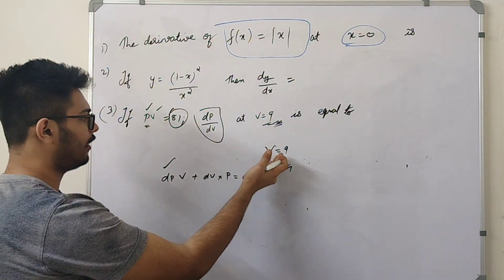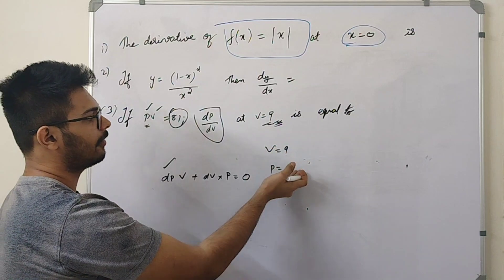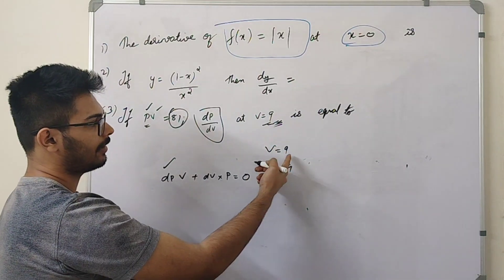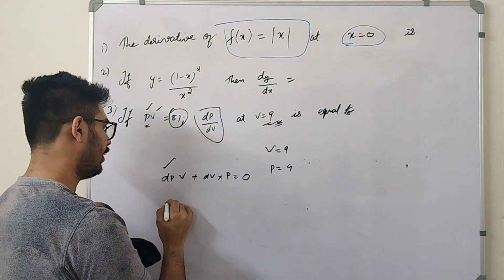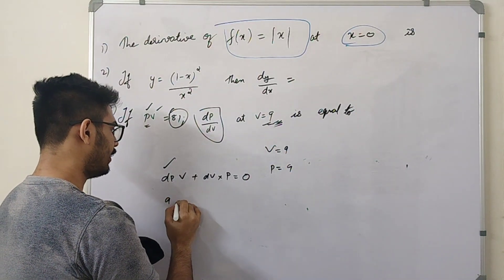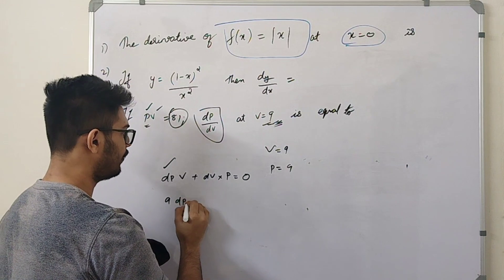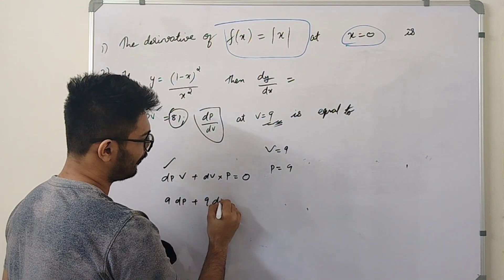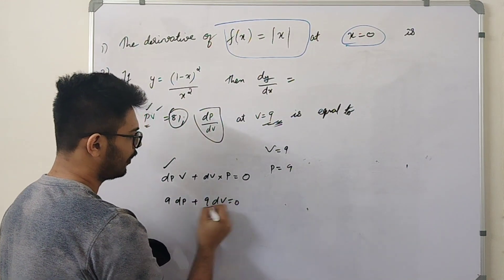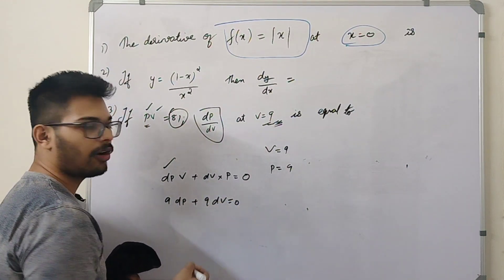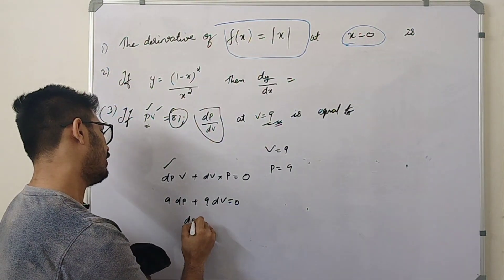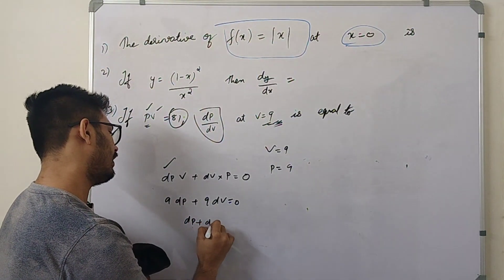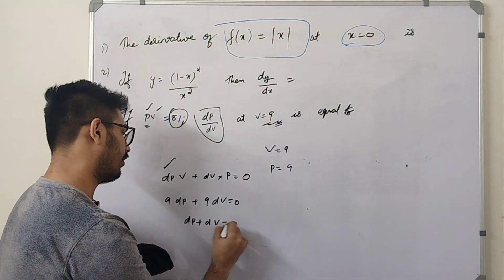If we put v equal to 9 and p equal to 9, then p is equal to 9. The value of v is equal to 9, p decreasing in the third function. The value of v is equal to 9 and p is equal to 0.